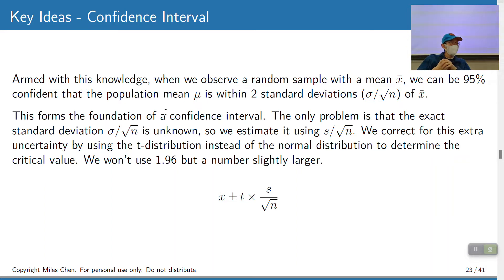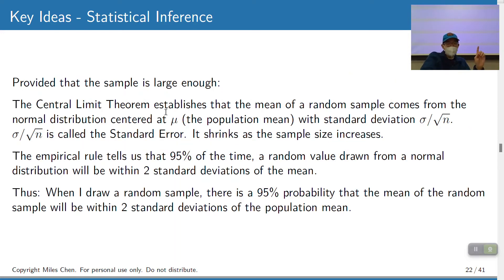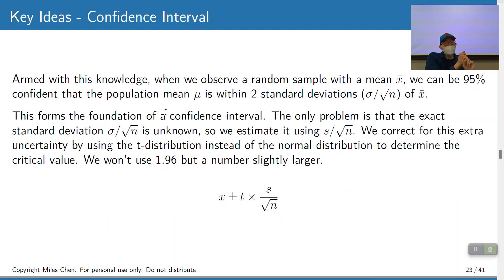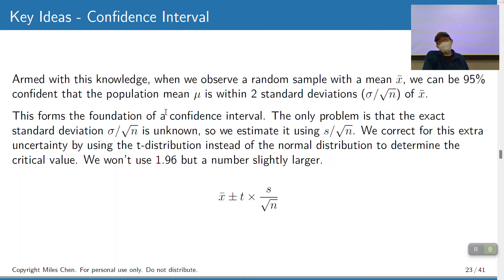I use the word 'confidence' rather than 'probability' because the population mean is either inside your confidence interval or it's not — it's not subject to randomness or uncertainty. Probability only makes sense when you talk about uncertain events. So we say we're 95% confident that the population mean is within about two standard errors of the sample mean x-bar.